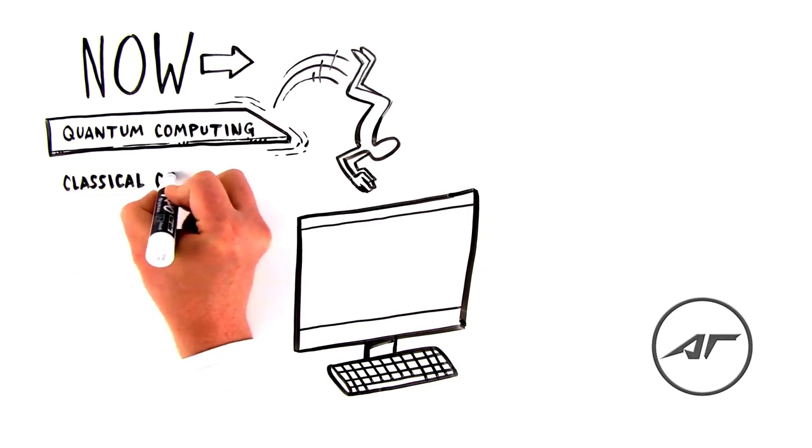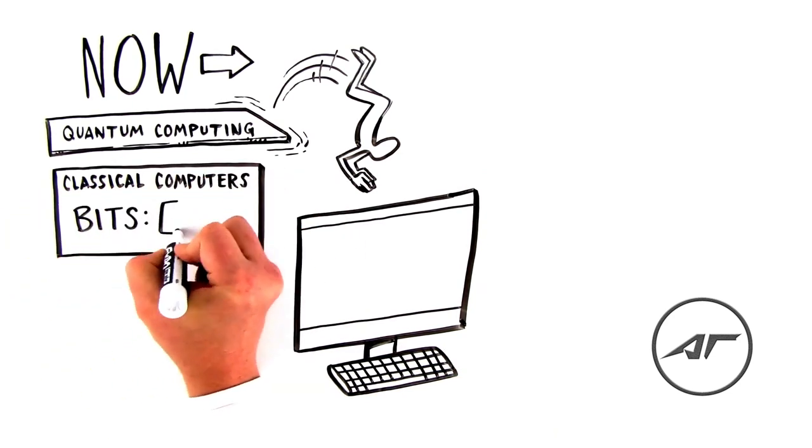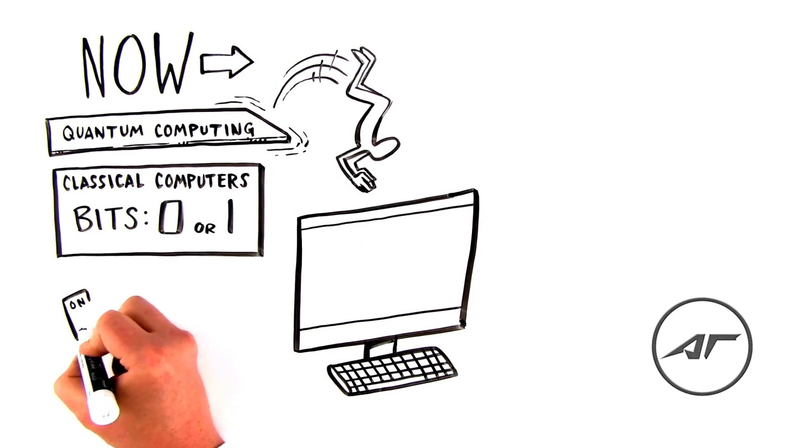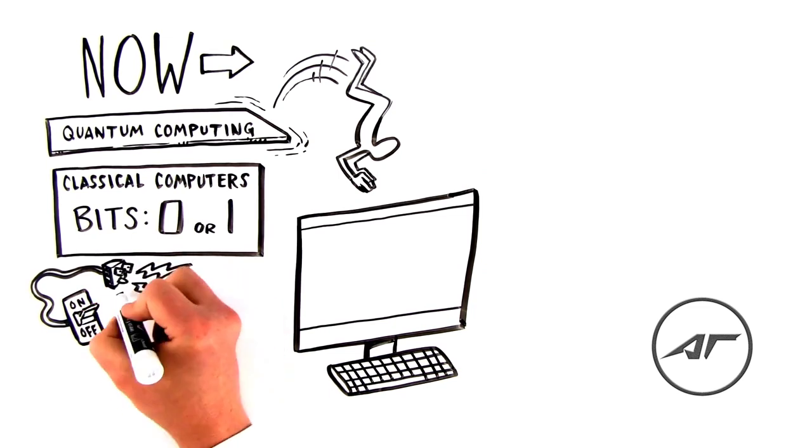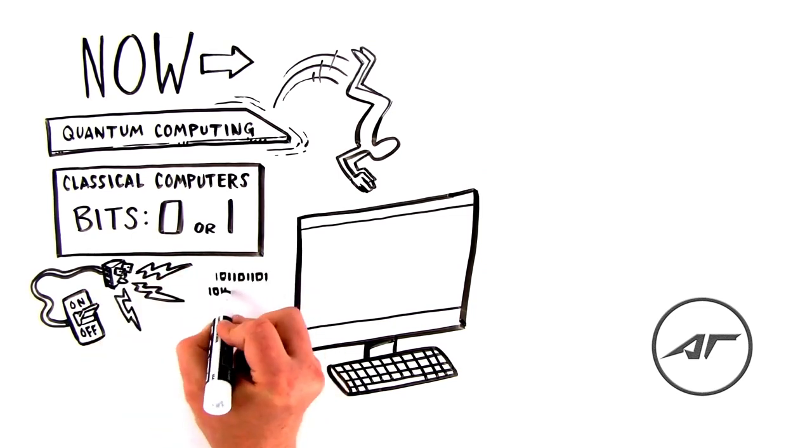Classical computers run on bits, which can either be zero or one. These zeros and ones come from the absence or presence of electricity in the wires of your computer. The computer does calculations by manipulating these zeros and ones.